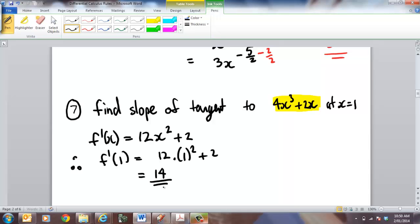So therefore, f dashed of 1 is going to be equal to 12 times by 1 squared plus 2. It's going to give me an answer of 14. So it tells me for that function there, and I don't know really what that function is, but it could be something like this. It's a quartic, cubic, sorry. So it's got a turning point.